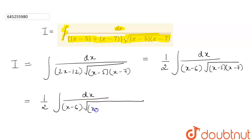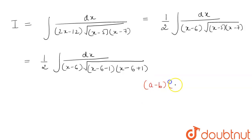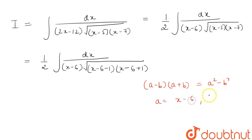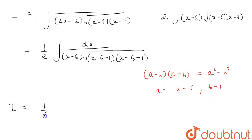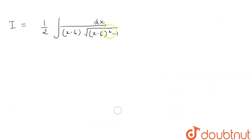Under the root, we can rewrite x minus 5 as (x minus 6) plus 1, and x minus 7 as (x minus 6) minus 1. Now we apply the identity (a minus b)(a plus b) = a squared minus b squared, where a equals x minus 6 and b equals 1. So the expression under the root becomes (x minus 6) squared minus 1.